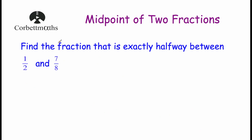Our next question says: find the fraction that is exactly halfway between one-half and seven-eighths. Again, we're going to add the two fractions together. Our denominators are two and eight, and the lowest common multiple of two and eight is eight. So let's have eight as the common denominator.